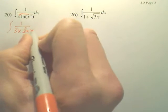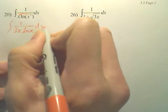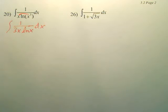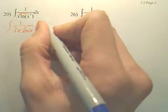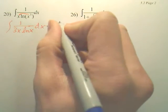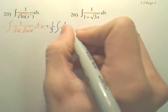And this becomes ln x, and don't forget little dx. Next step, I would probably next pull out the one-third, just so it's a little bit prettier.